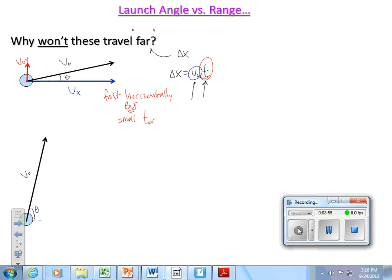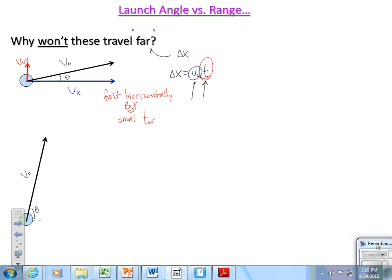If we look at this initial vertical component of velocity, it's small, pretty darn small. Since this thing goes slowly vertically, at least initially, it's not going to spend a lot of time in the air. This one goes fast horizontally but has small time in the air.